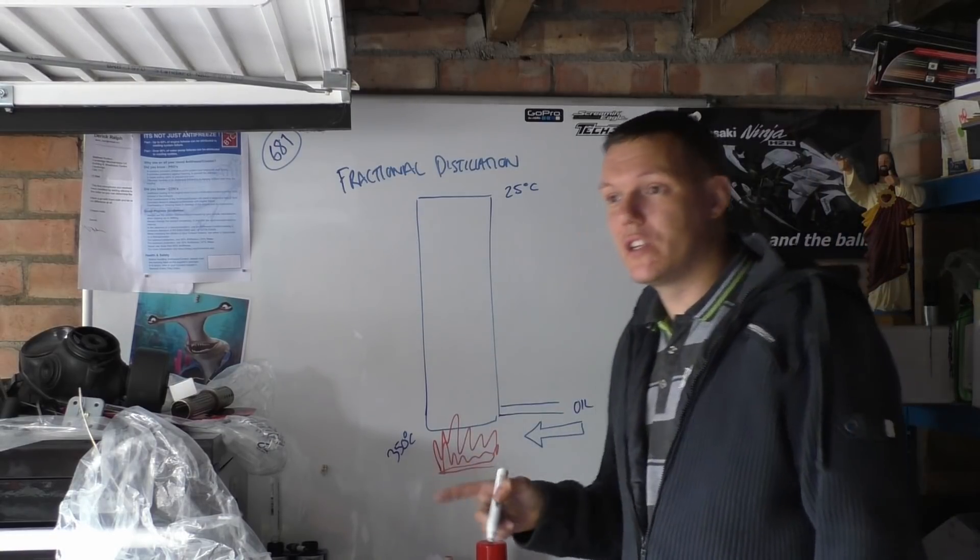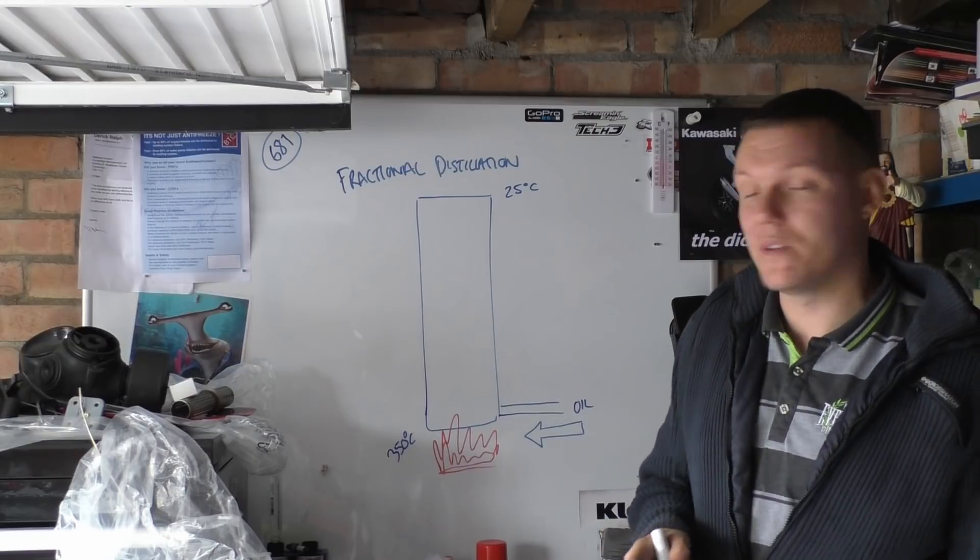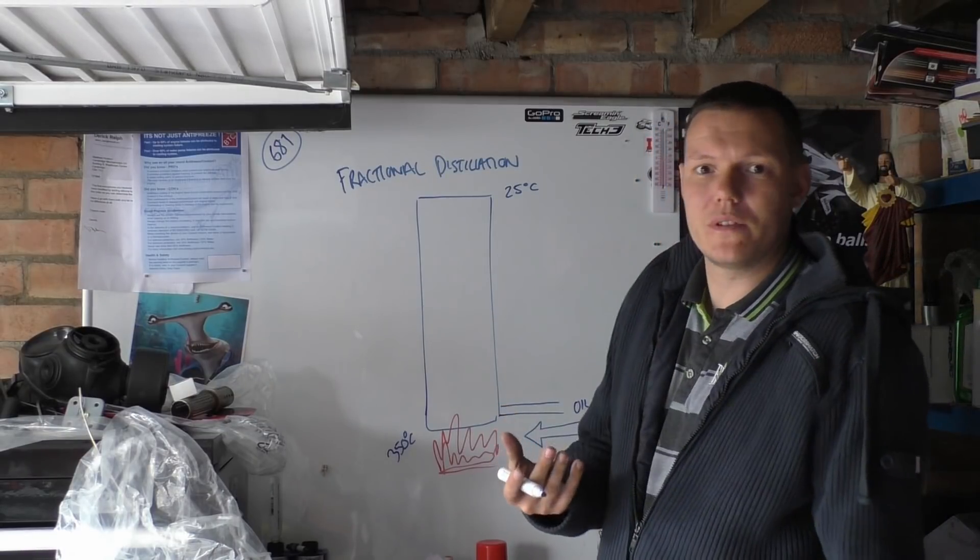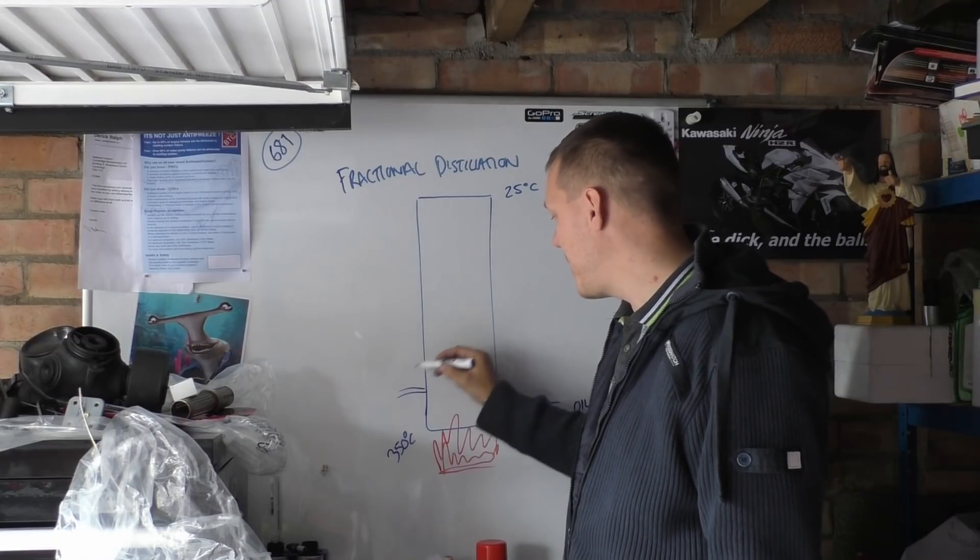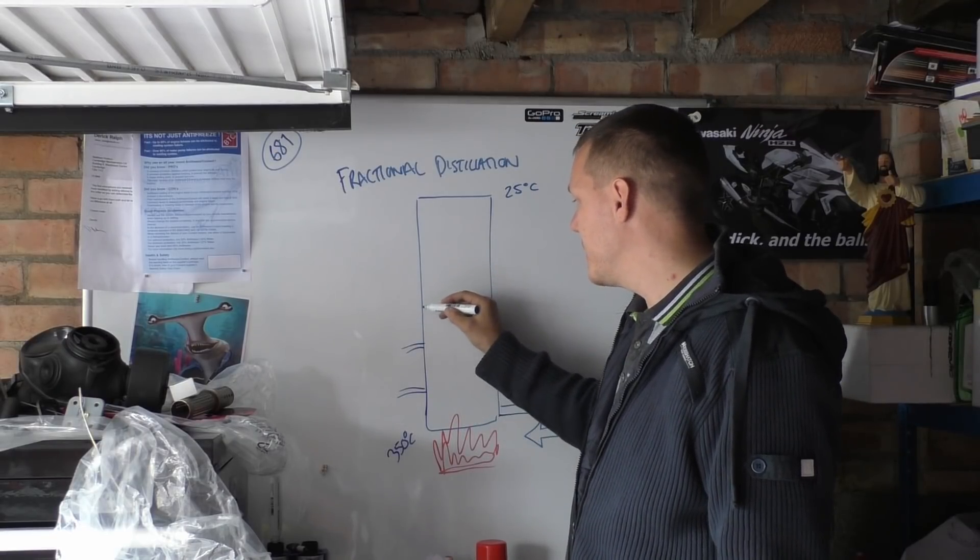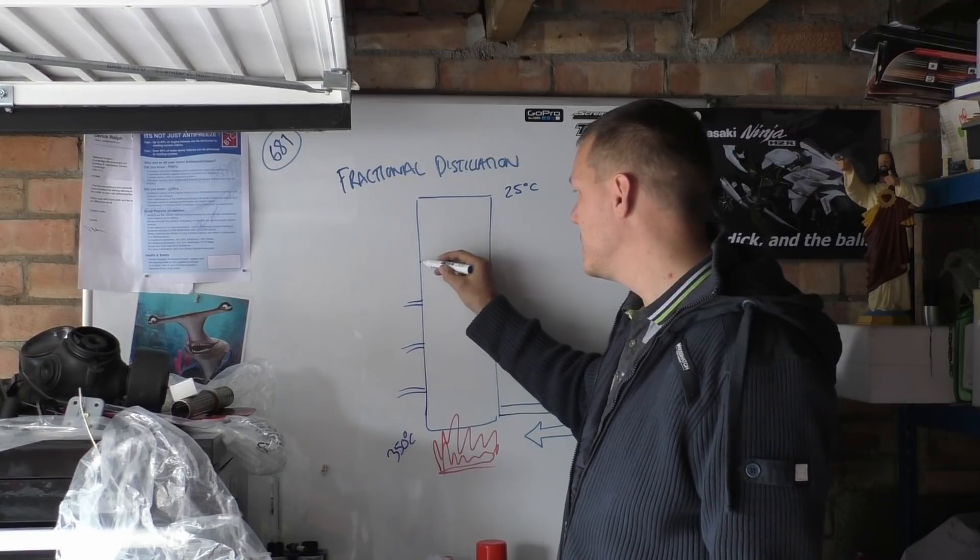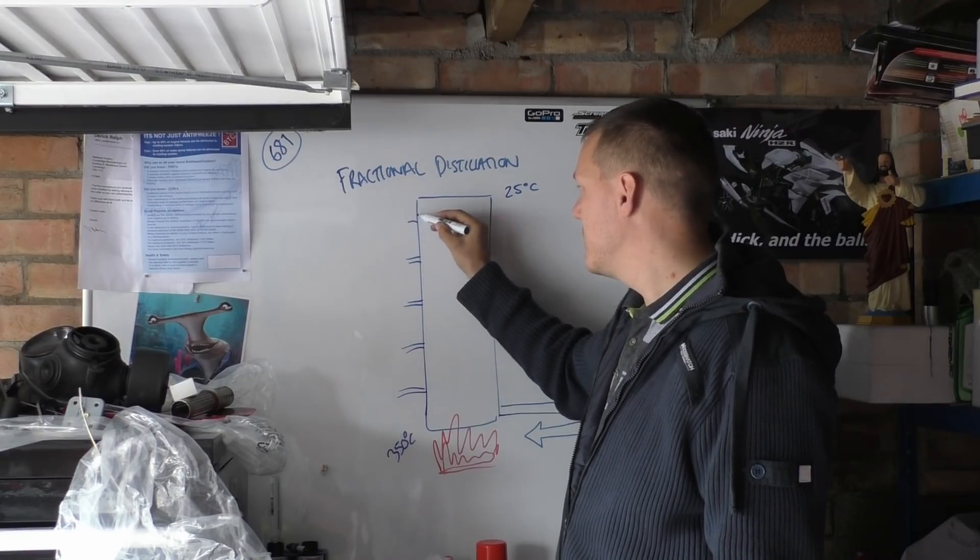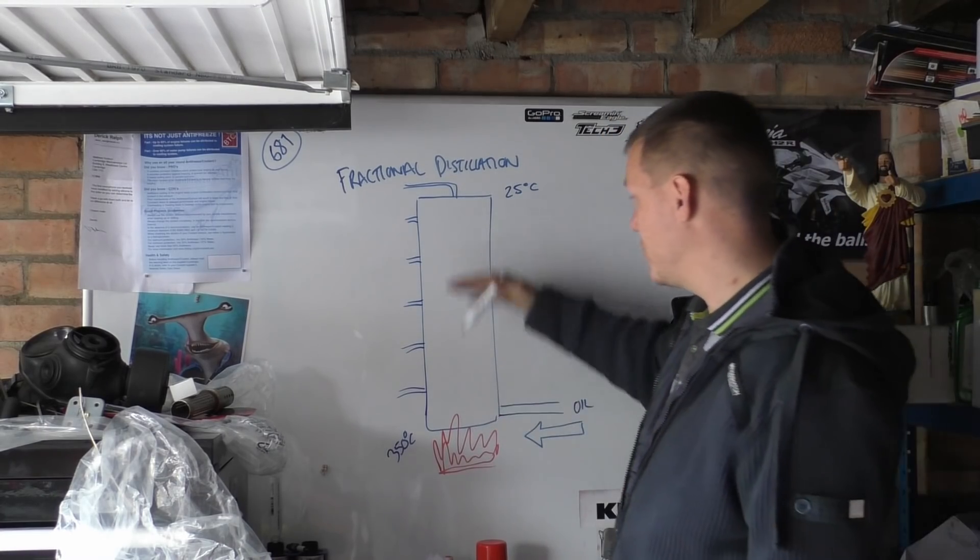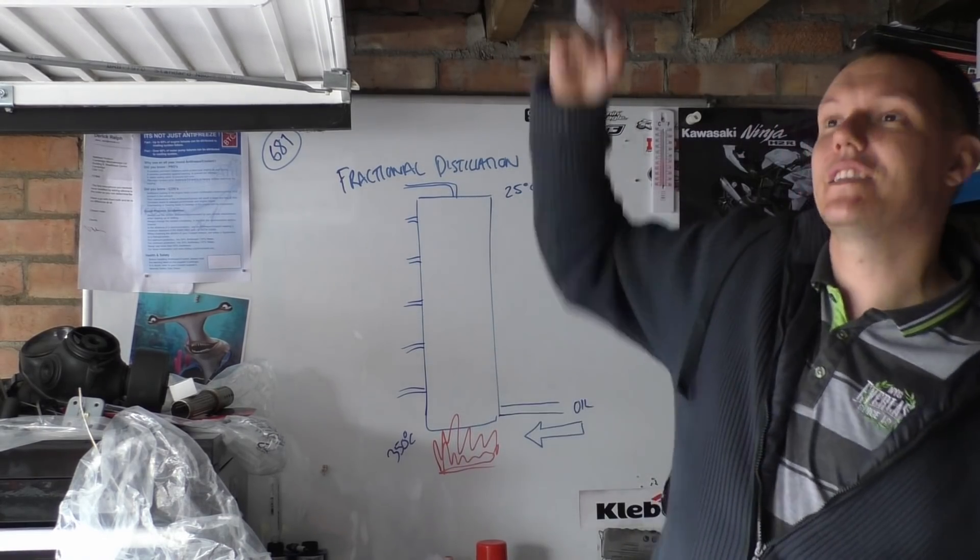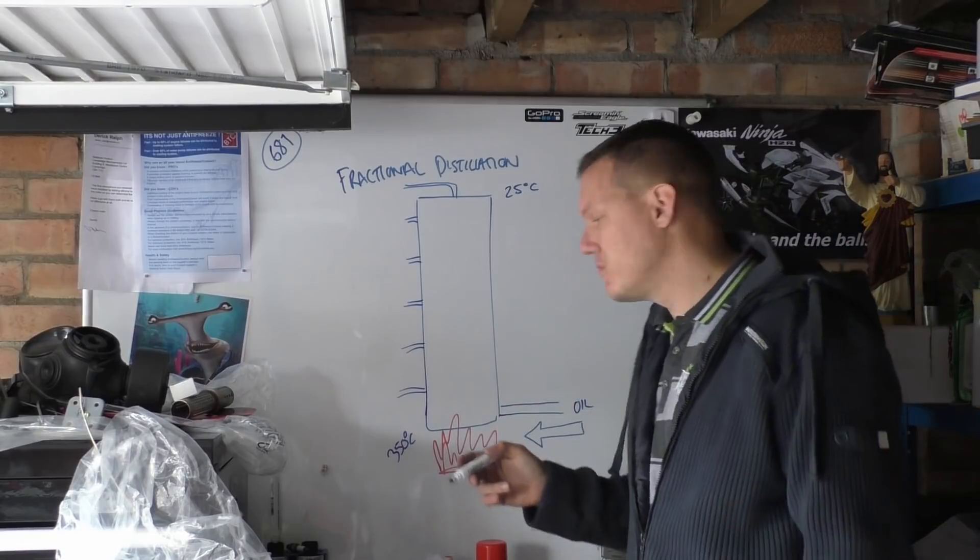We'll try and actually go to a fractional distillation plant, that might be a good video in the future because this is important. This is where all our fuel comes from. Basically what they do is they pipe off fractions, they pipe off certain sections, certain divisions at certain heights up this tower.